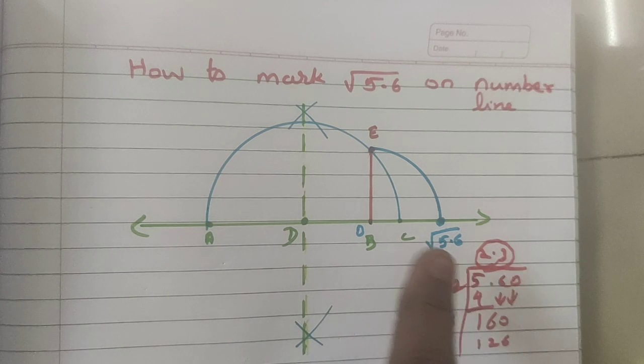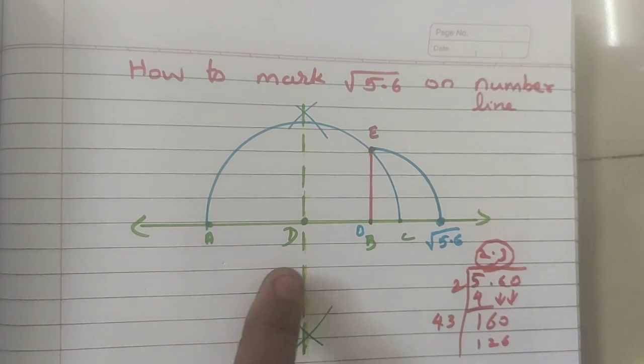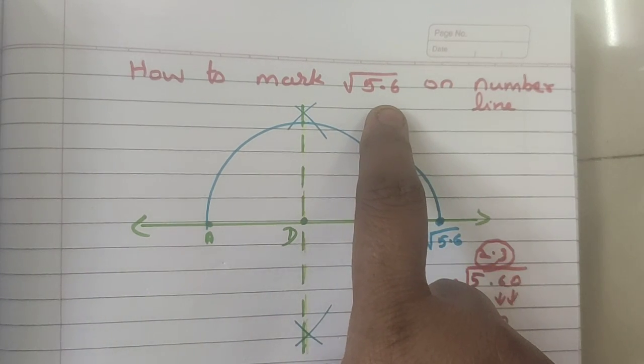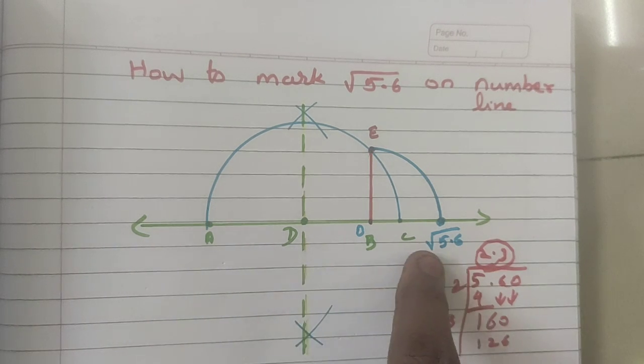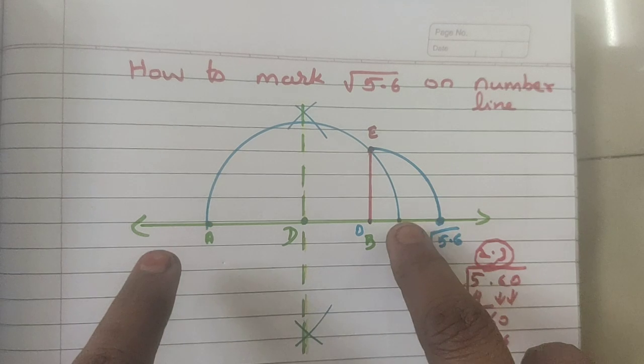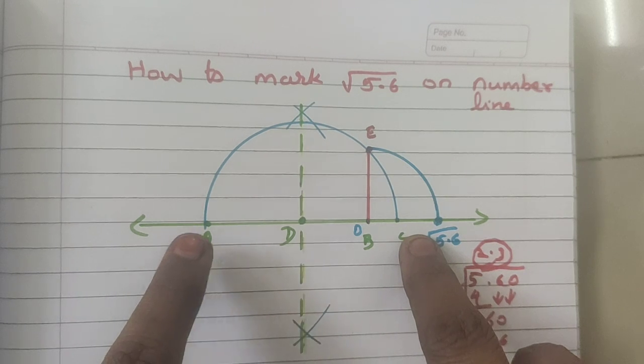Now, again, one more time, I will explain the construction. Draw any suitable length. Mark a point A. From A, measure whatever the given measurement, 5.6. So, 5.6, B is 5.6. Next, from B, mark 1 cm. That is C. Now, you should bisect A and C.